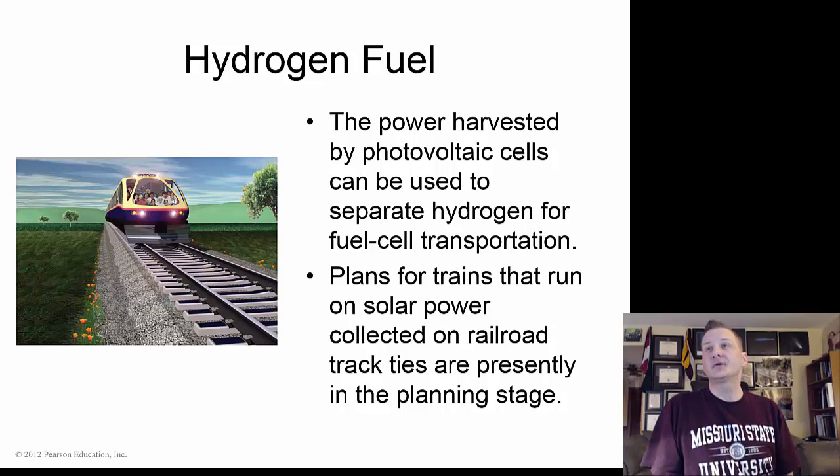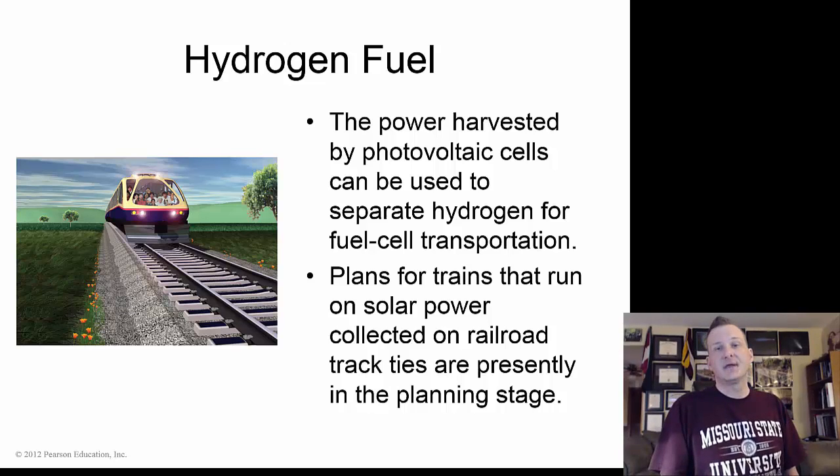Finally, hydrogen fuel. The power harvested by the photovoltaic cells, the solar cells, can be used to separate hydrogen for fuel cell transportation. Not really big in the United States right now. It's really big in Europe though. Plans for trains that run on solar power collected on railroad track ties are presently in the planning stages. And again, Europe is leading this effort. And that's it for Chapter 3.